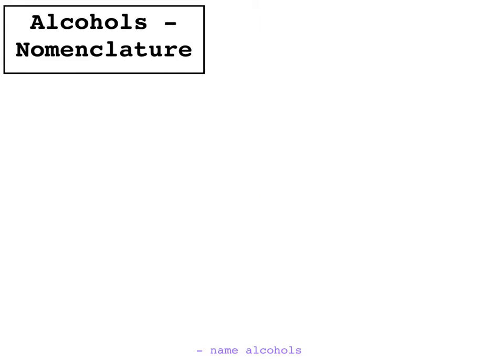First we're going to start with naming alcohols. The two things you've got to really think about when naming alcohols are the carbon chain and where the OH is and how many of them there are. So let's take the following alcohol.